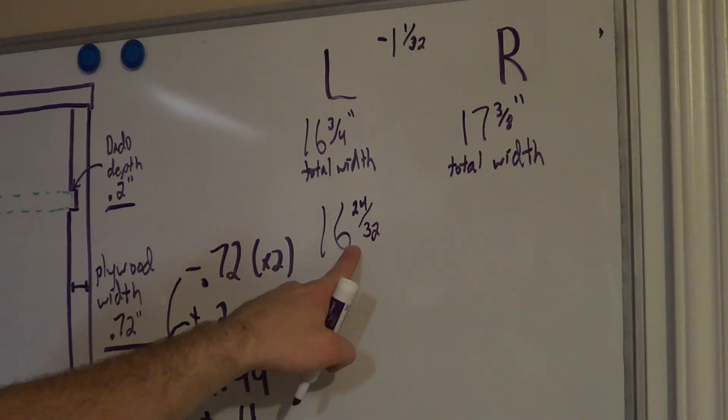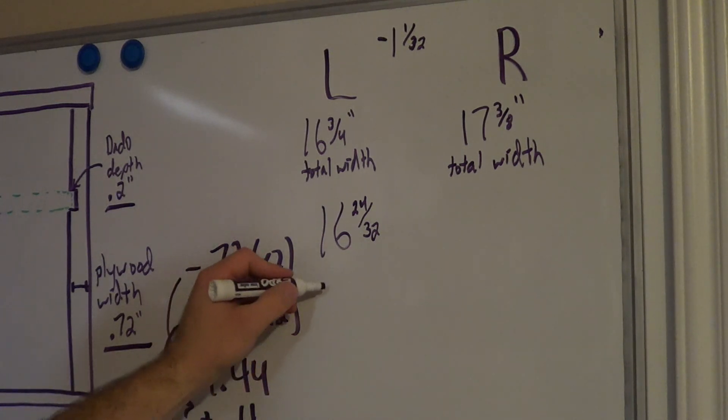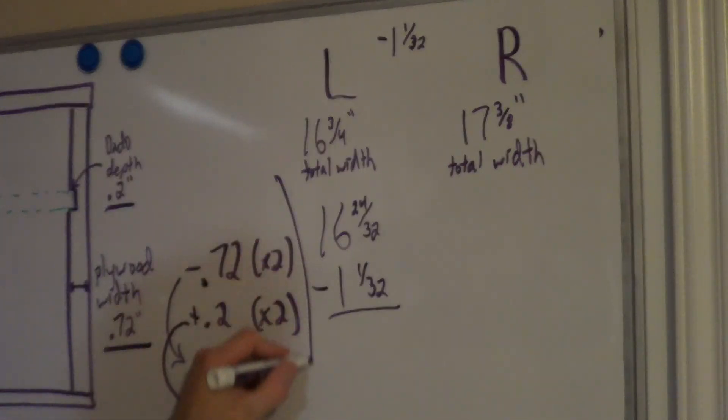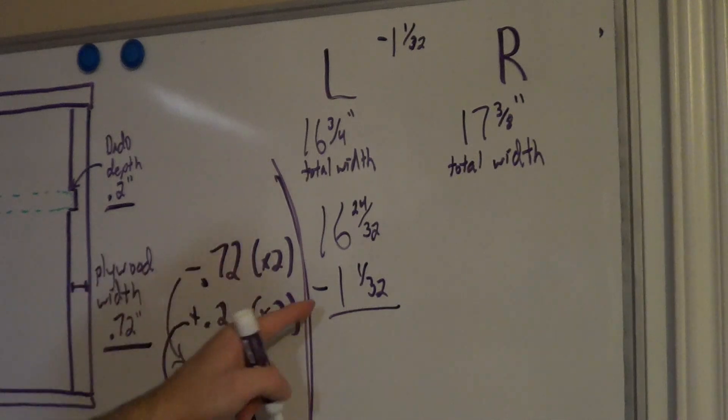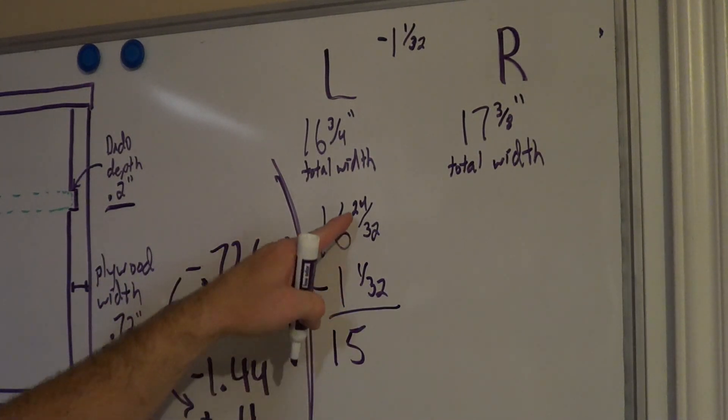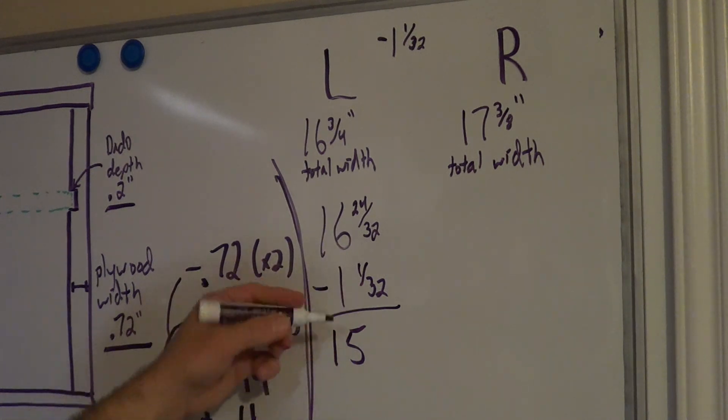So, there's that total width of the left column. Now, I'm going to go ahead and subtract 1 and 1/32 from the left side. 16 minus 1 should give us just 15, and then 24/32 minus 1/32 is just 23/32.